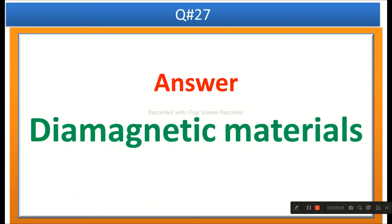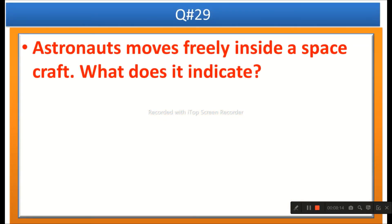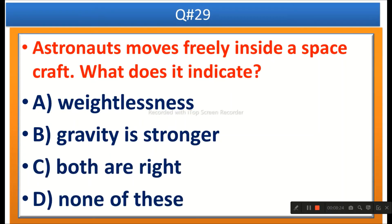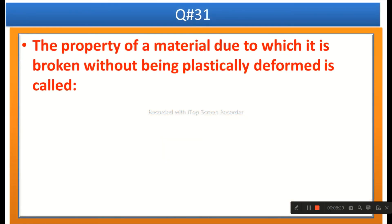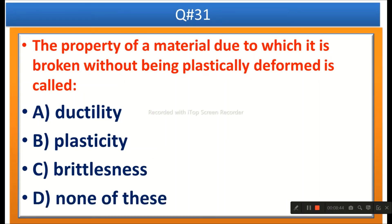The next question: Astronauts move freely inside a spacecraft — what does it indicate? Options are weightlessness, gravity is stronger, both are right, or none of these. The right answer is weightlessness. The next question: The property of a material due to which it is broken without being plastically deformed is called — options are ductility, plasticity, brittleness, or none of these. The right answer is brittleness.